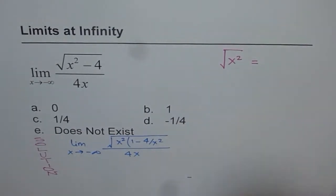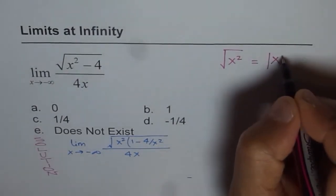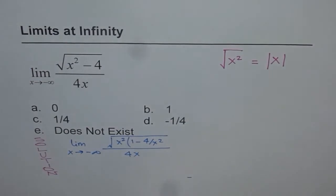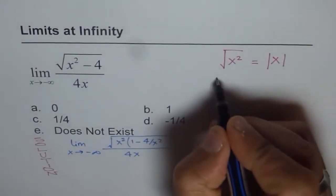Now most students think that it is just x and that is where they make a mistake. Square root of x squared is absolute value of x, since square root is always positive.